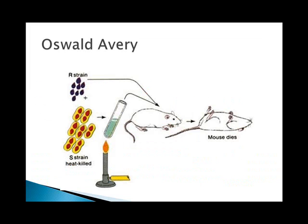Oswald Avery followed up, proving that DNA was the agent of transfer in the bacterial transformation. He was able to take Griffith's experiments and isolate down the factors that were actually taking place, causing those mice to die because the R strain picked up the DNA from the S strain.